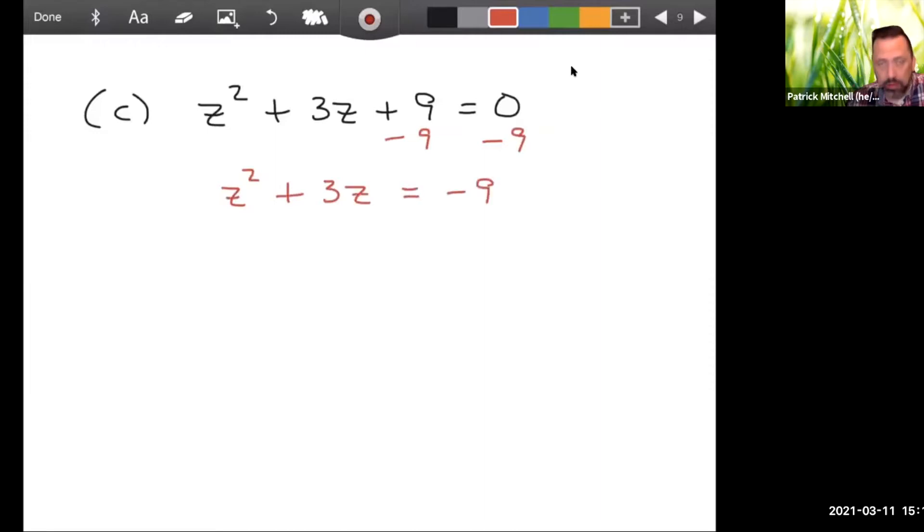So that's going to give us z squared plus 3z equals negative 9. Alright, so now we do our magic trick. The number attached to the z is 3. And now you're about to see what happens. 3 divided by 2 is 3 halves. And 3 halves squared is 9 fourths. The magic number is 9 fourths. That's the number we have to add on both sides, unfortunately.